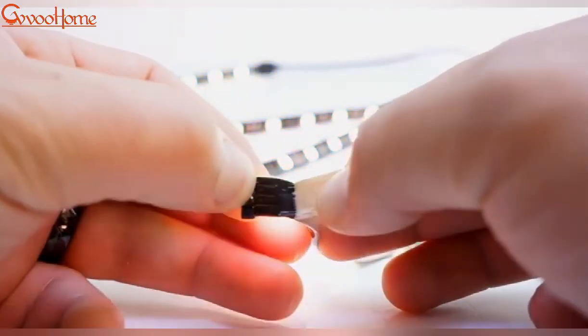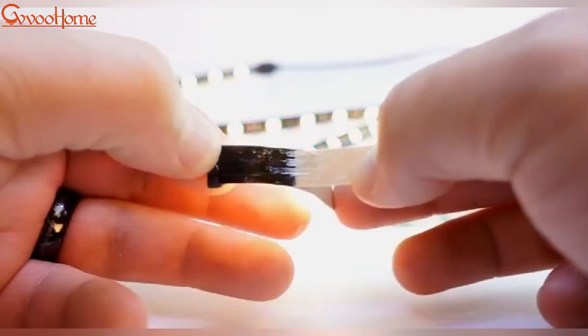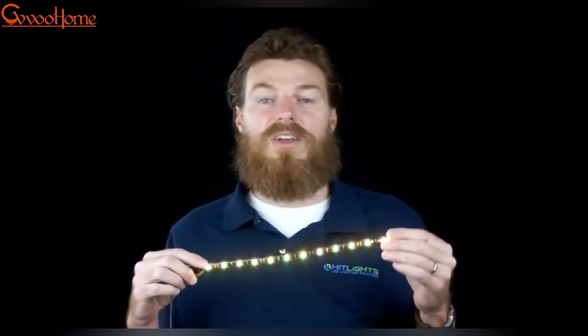Now peel the paper off the back and you can stick your strips to any smooth, clean, dry surface. They're easy to install and come with everything you need. Get your Eclipse light kit.